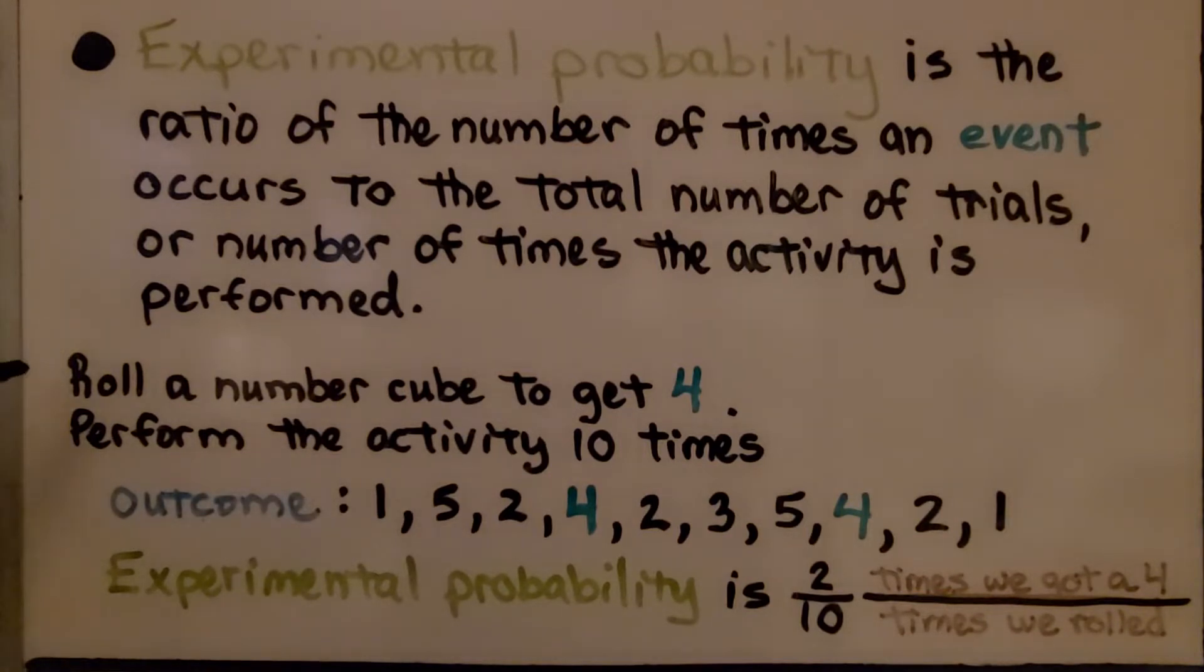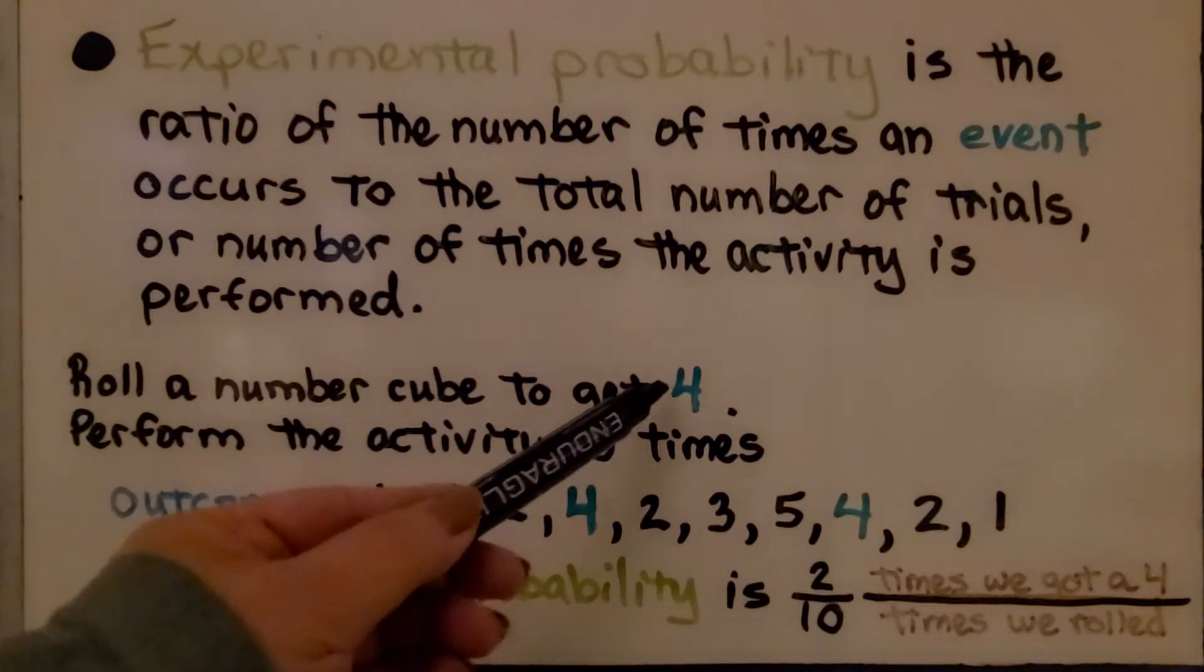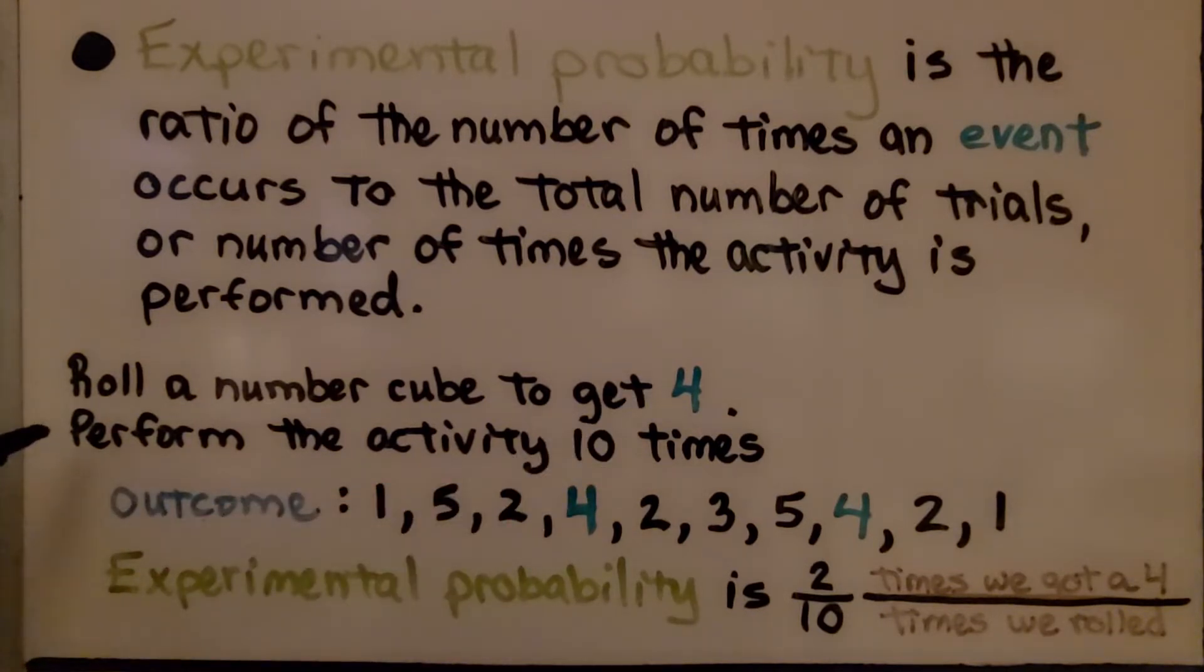If we roll a number cube, we want to get a 4. We perform the activity 10 times, and this is our outcome. We roll and get a 1, then a 5, then a 2, we finally get a 4, then a 2, a 3, a 5, we get another 4, then we get a 2, we get a 1. The experimental probability is 2 over 10. We got two 4s. It's the number of times we got a 4 over 10, the number of times we rolled.